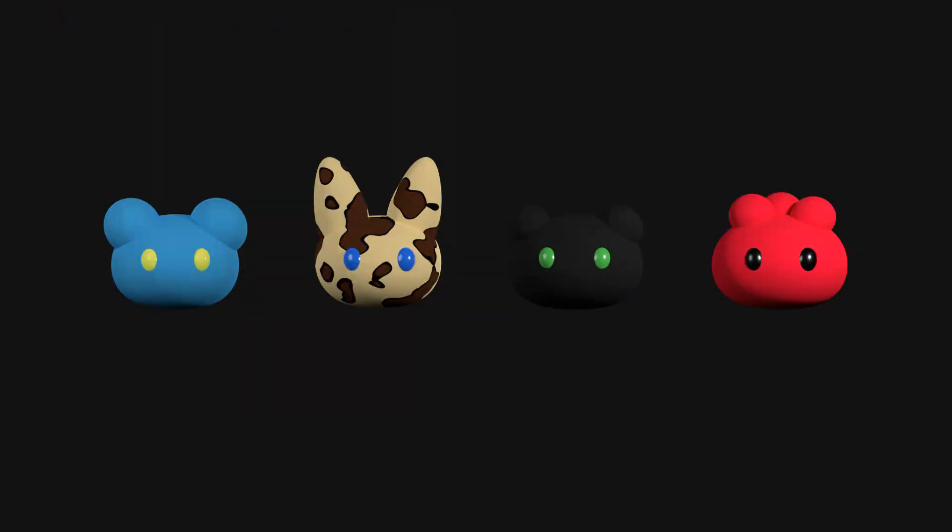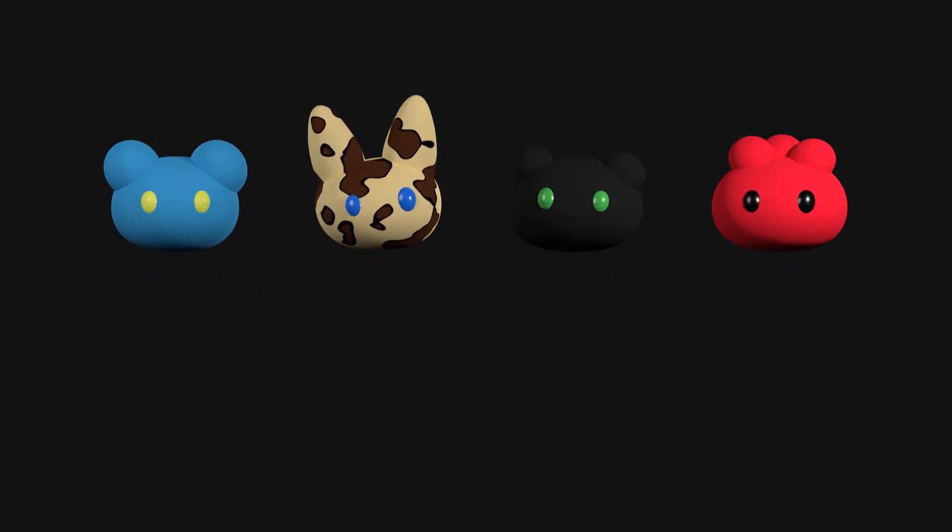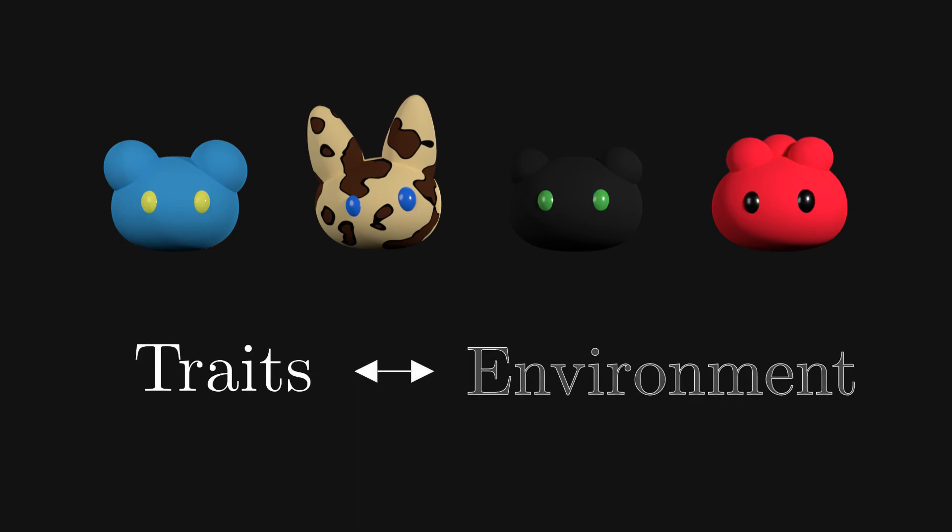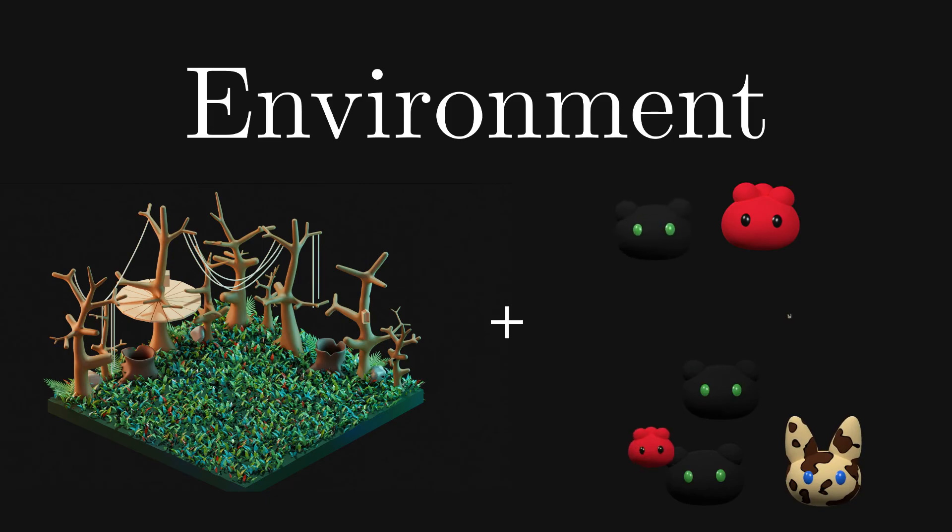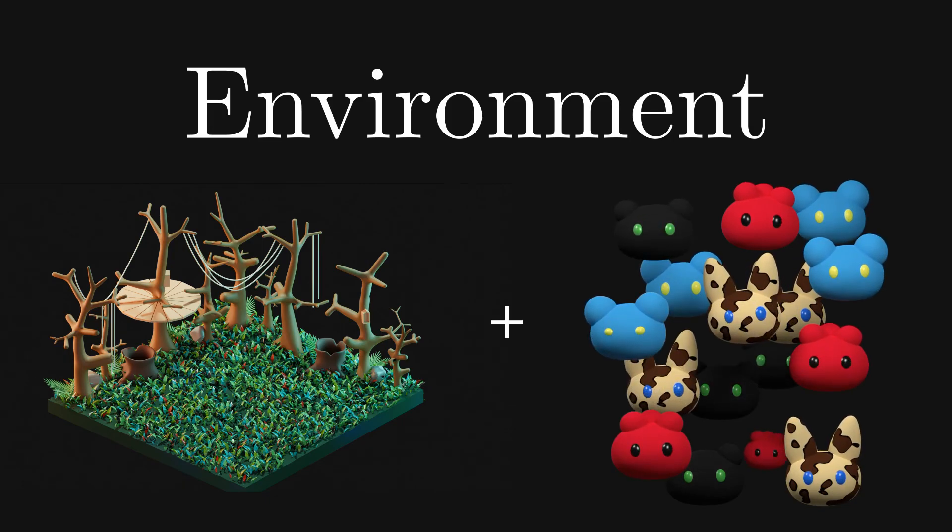Which replicators were more effective, depended on how well their traits matched the environment. This environment included the population of replicators itself, and was therefore constantly changing as the population evolved.